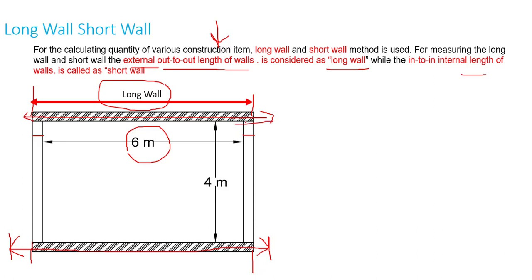If we measure one wall as a long wall — taking it out to out — then we measure the perpendicular wall from the inner face to inner face, making it an in to in measurement. This is considered the short wall. So if you measure any wall as out to out, that is called the long wall, and if you take any wall as an in to in dimension, that is called the short wall.